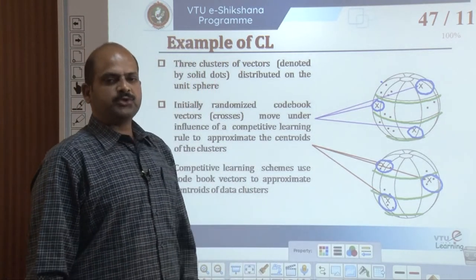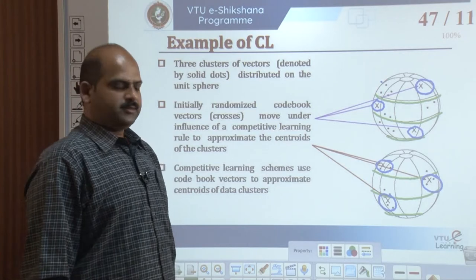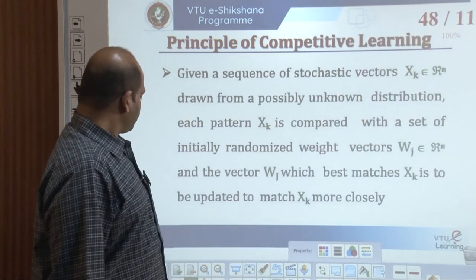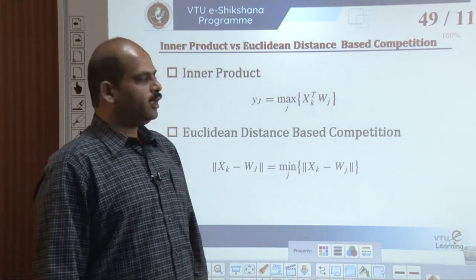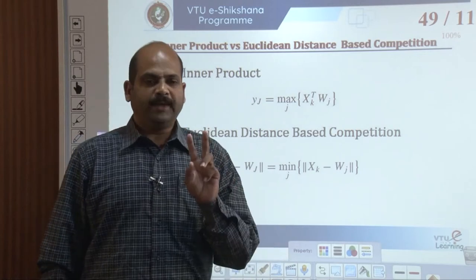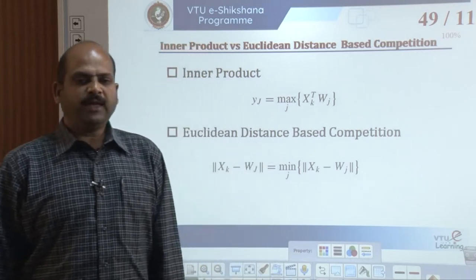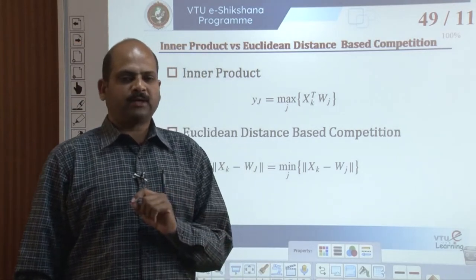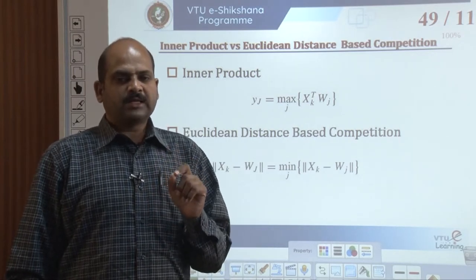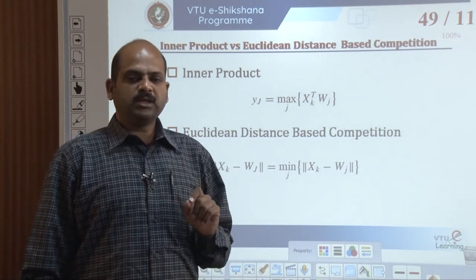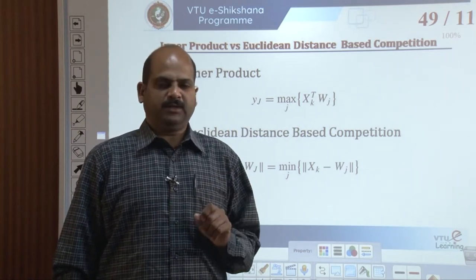With that, we study the next topic: inner product versus Euclidean distance-based competitions. There are two ways in which the best matching code vector can be found. The first way is to employ an inner product criterion for the input vector, selecting a codebook vector by choosing the neuron in the competitive layer which receives the maximum activation.